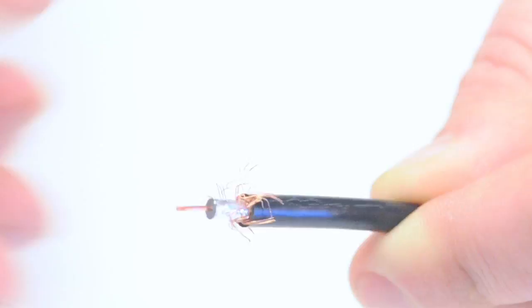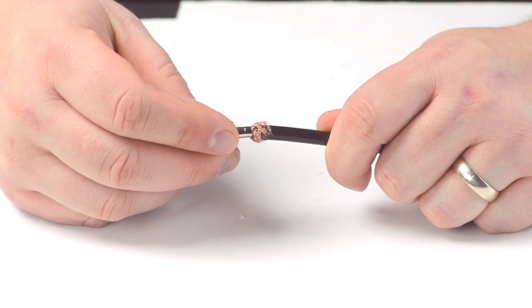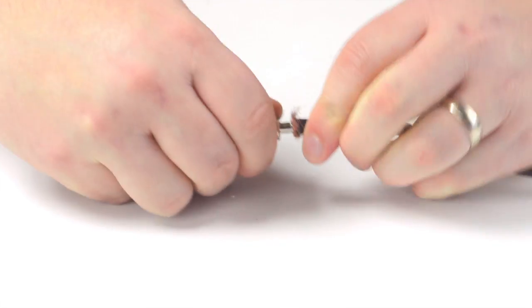Pull back the braided shield and insert the connector housing onto the cable. Apply pressure and twist as needed.